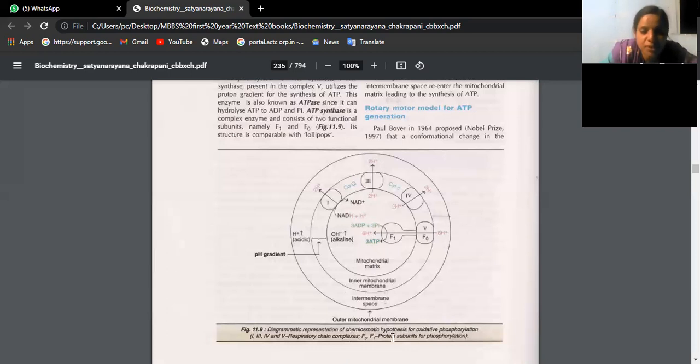These 6 hydrogen ions are responsible for coupling of ADPs with high-energy phosphates to form ATP. So this hypothesis is called chemiosmotic hypothesis.